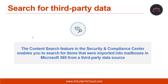How do you search for third-party data? To search or place a hold on any type of third-party data that you have imported into Microsoft 365, you can use the 'kind:externaldata' message property value pair in the keyword box of the content search or when creating a query-based hold. This content search feature enables you to search for items that were imported into mailboxes in Microsoft 365 from a third-party data source.